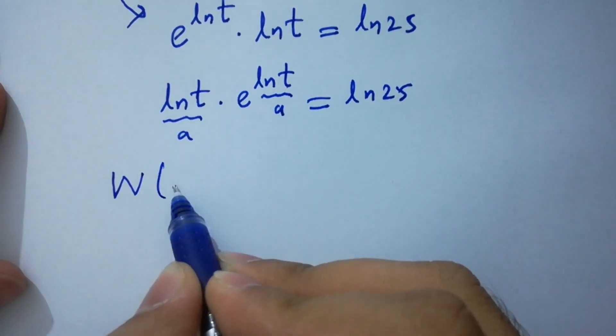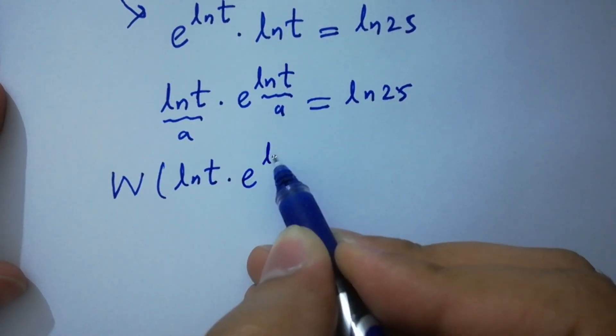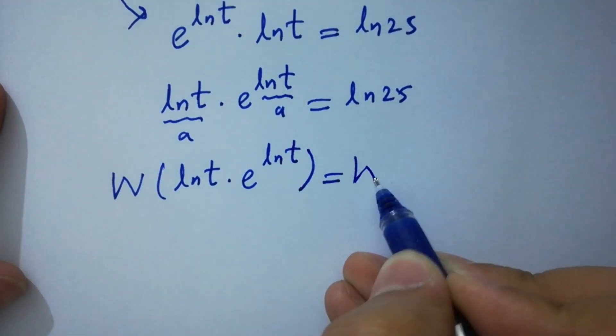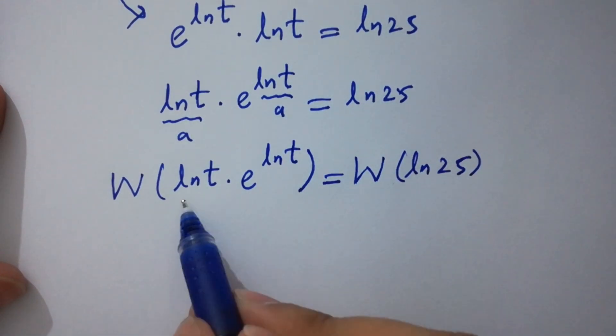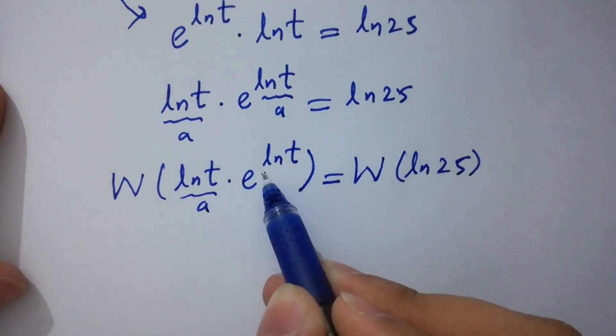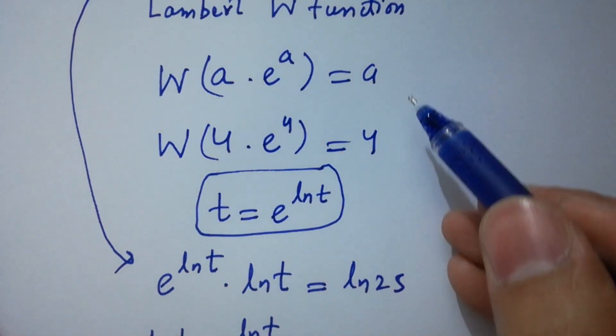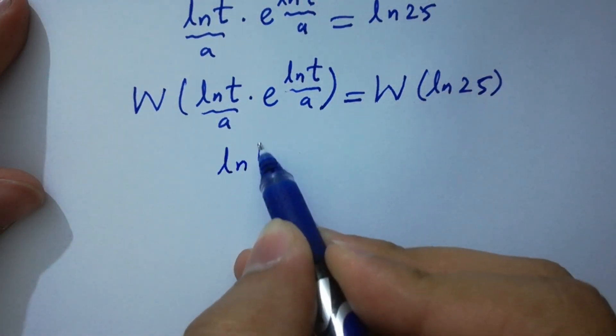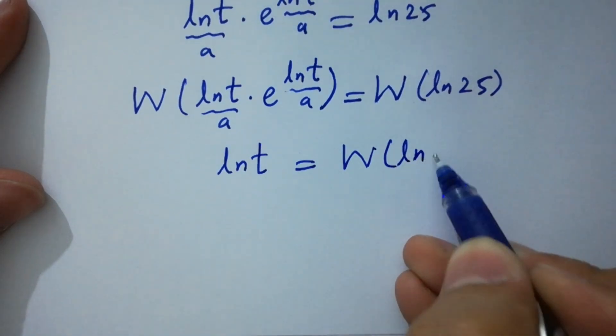W of ln t times e to the power ln t equal to W of ln 25. So, here W of a times e to the power a will be equal to a. So, we have here ln t equal to W of ln 25 as it is.